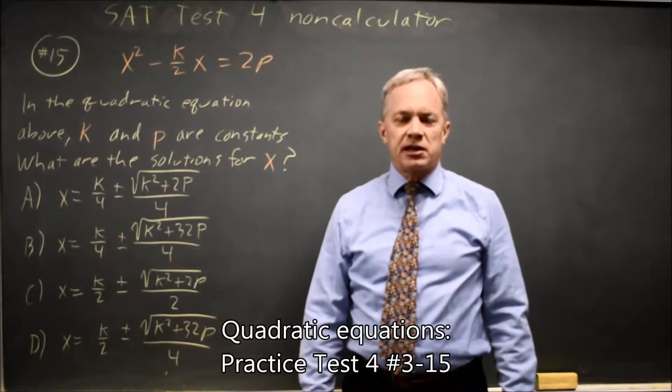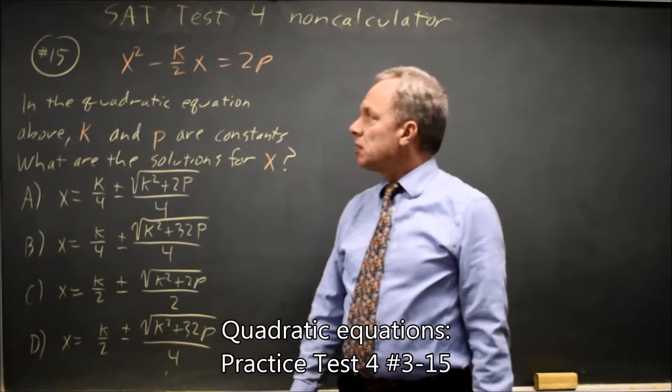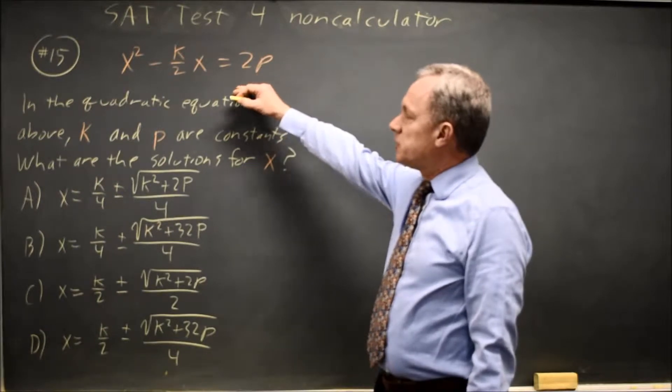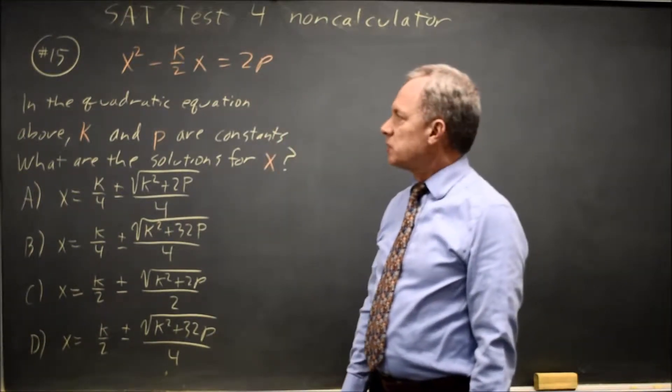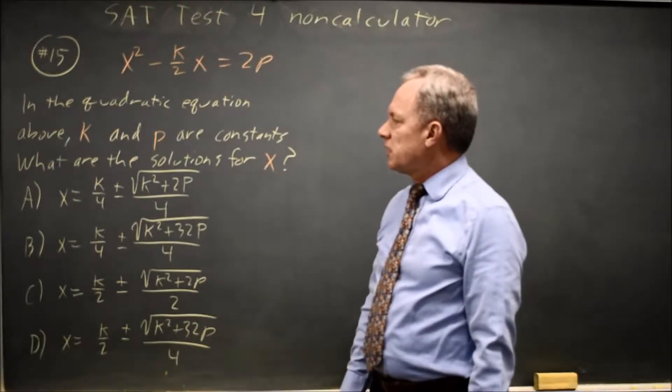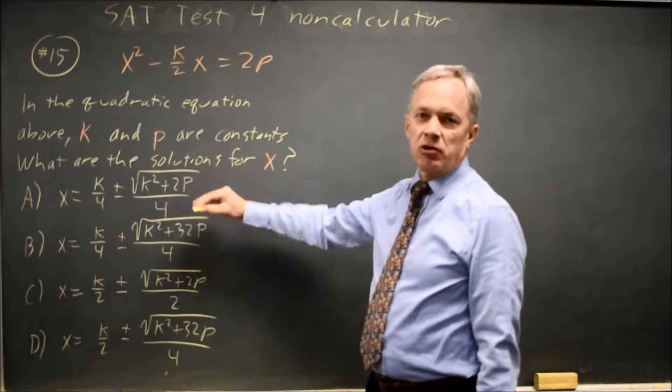This is SAT Test 4, non-calculator question number 15. College Board gives us a quadratic equation with k and p instead of regular numbers as coefficients and asks for the solutions to this quadratic equation.